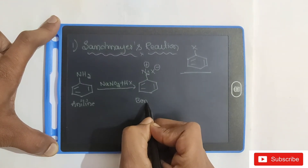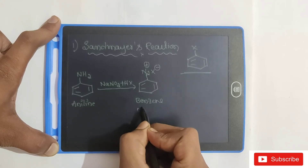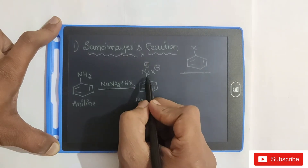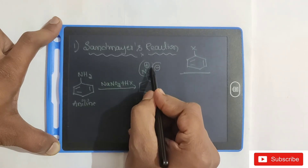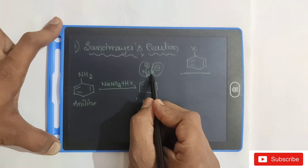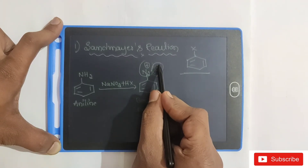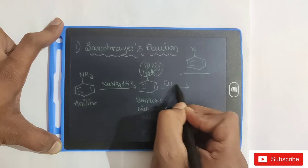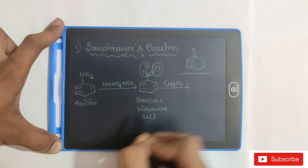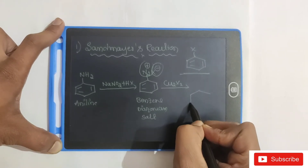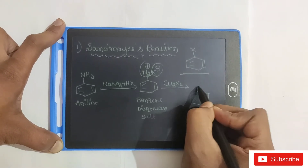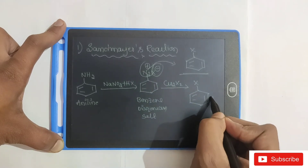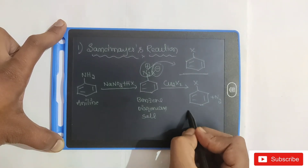This is benzene diazonium salt — it is called a salt because it is a charged species. The halide atom carries a negative charge and is more electronegative, while the diazonium part carries a positive charge. This benzene diazonium salt is then treated with a cuprous salt — Cu₂X₂ — to give haloarane.